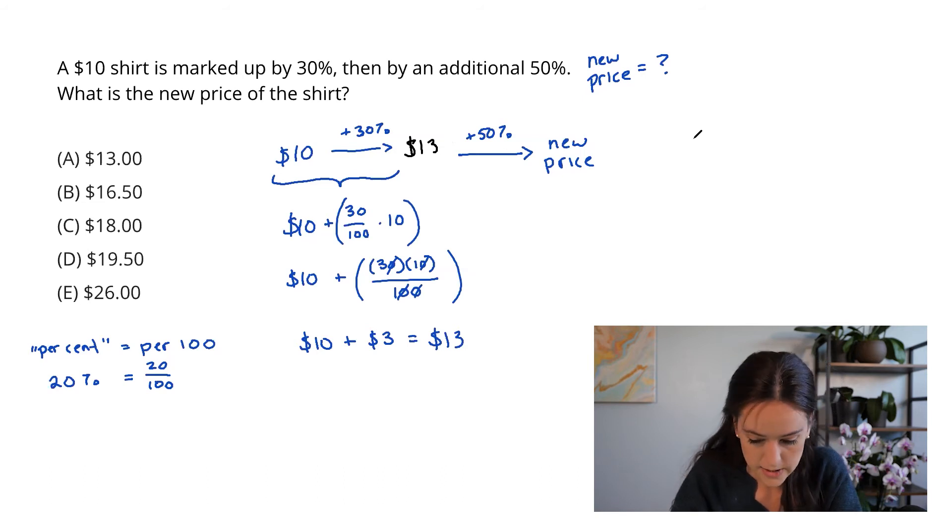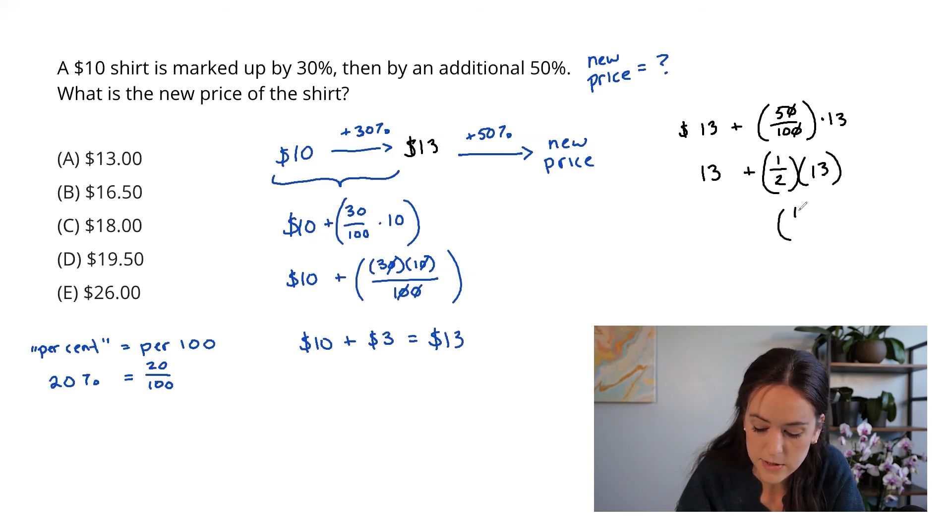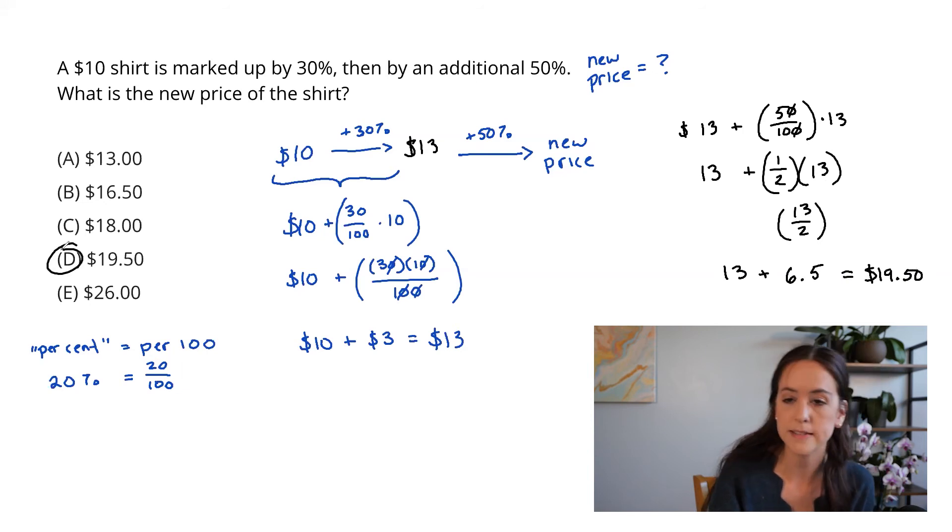And to do that, we're going to do the same thing we did before, which is 13 plus 50 over 100 times 13. I'm going to do that out. 50 over 100 is 1 half times 13, which is 13 over 2, which is 6.5. And that gives me $19.50, which in this case is answer choice D.